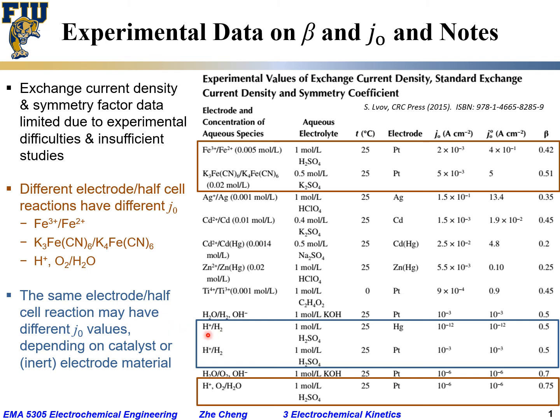Let's take a look at this redox pair between proton and hydrogen gas. One electrode would be mercury inert electrode, the other one would be platinum electrode. And you can see that between these two, the standard exchange current density differs by 10 to the power of 9.